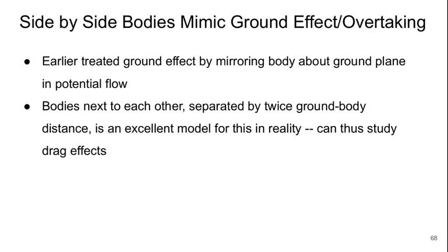Earlier in the first lecture, we treated the effect of the ground by mirroring a body about a ground plane in a potential flow. And so if we think of bodies next to each other that are separated by two times the ground body distance, this is an excellent model for the effect that this has on drag as well. And so we can study the drag effects that way.